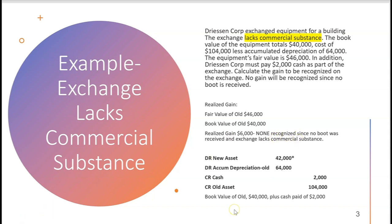None of that $6,000 realized gain is recognized since no boot was received. The journal entry would credit cash paid of $2,000, credit the old asset at $104,000, debit accumulated depreciation of $64,000, and debit the new asset for $42,000. When the exchange lacks commercial substance, the new asset's value equals the book value of the old ($40,000) plus the cash paid ($2,000), totaling $42,000. No gain is recognized because no boot was received.